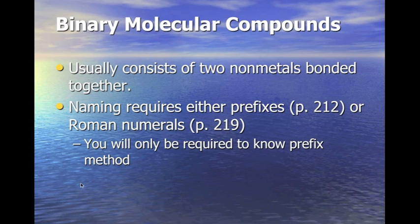Binary molecular compounds consist of two non-metals bonded together. We have the prefix system on page 212, and you have to memorize it: mono, di, tri, tetra, penta, hexa, hepta, octa, nona, deca. You just have to have that memorized.